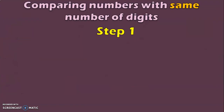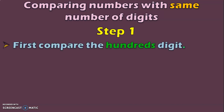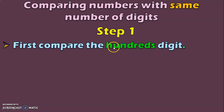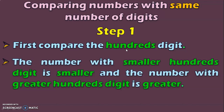Now let us move on to comparing numbers with the same number of digits — here, three-digit numbers. You should always begin your comparison from the extreme left, which is the highest place value. For a three-digit number, the highest place value is hundreds. So first start your comparison with the hundreds digit. The number with the smaller hundreds digit is smaller, and the number with the greater hundreds digit is greater.